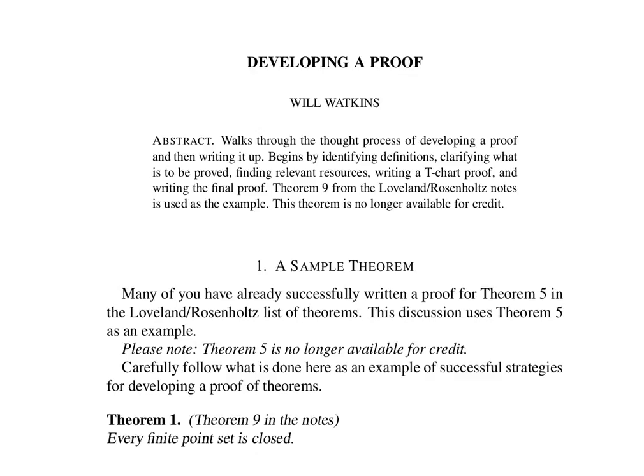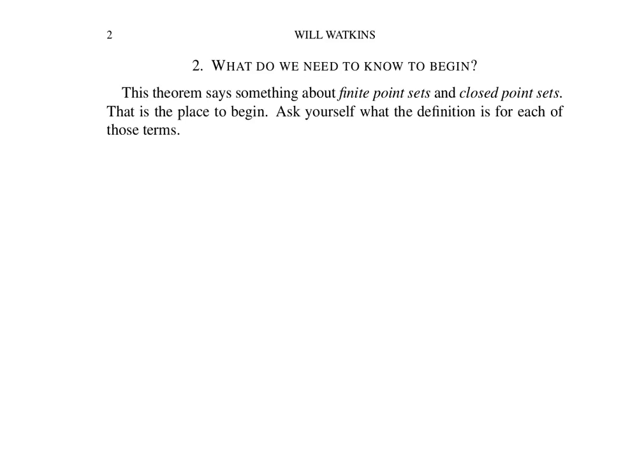Now all of this discussion is happening in the context of a set of axioms that we're developing. We're looking at a set of axioms that define what a topologist considers to be the real line. So where do we begin?